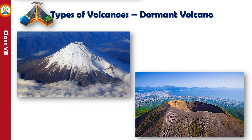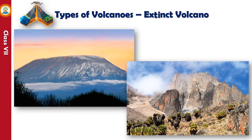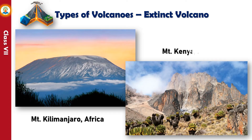A dormant volcano is one which has not erupted for a long time but may erupt any time, for example Mount Fujiyama in Japan and Mount Vesuvius in Italy. An extinct volcano is one that has no record of eruption and no possibility of eruption in future, for example Mount Kilimanjaro and Mount Kenya in Africa.